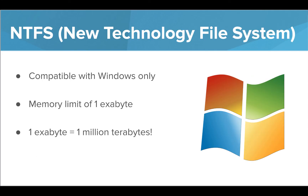Each major operating system also has its own file system that can be used. NTFS is a Windows system that comes with additional features and more memory than FAT32. There really isn't an actual memory limitation, as this system holds up to 1 exabyte of memory, which is equal to 1 million terabytes — a lot more than the 16 terabytes of FAT32.